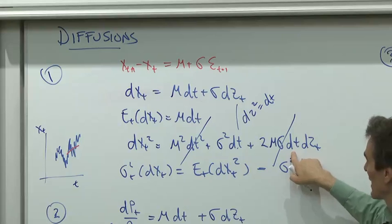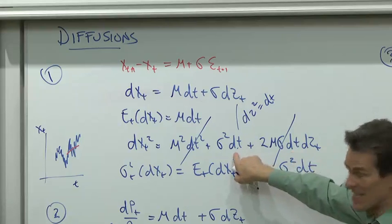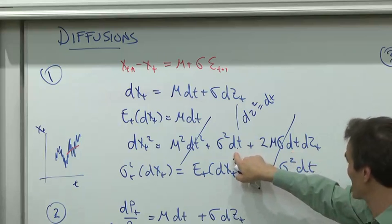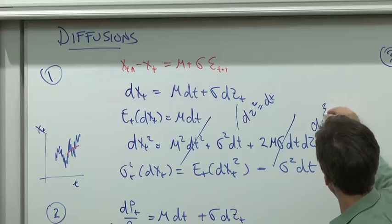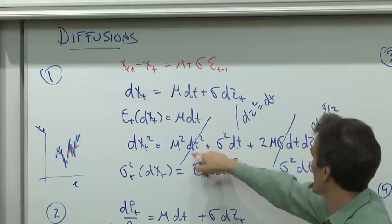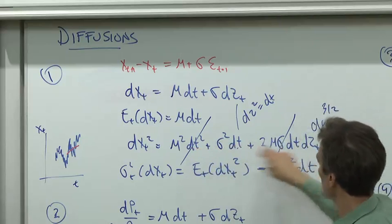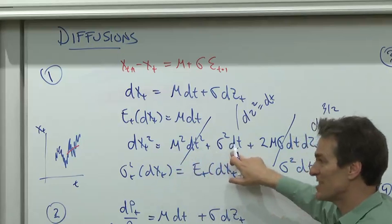Now let's look at the sizes of these terms. That's of order dt. Calculus says keep things of order dt. That is of order dt to the three halves. We have dt times the square root of dt. And that's of order dt squared. As the time interval shrinks, those things go away. So all that's left is dx squared equals dt.